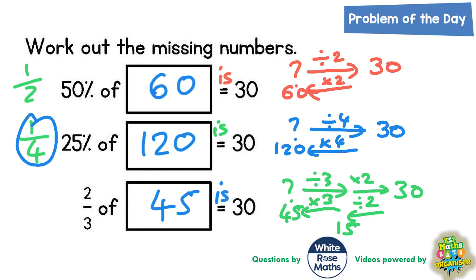So whether or not you use the bar model strategy or the number machine strategy and reversing the number machine, either way should get you the same answer: 60, 120, 45.